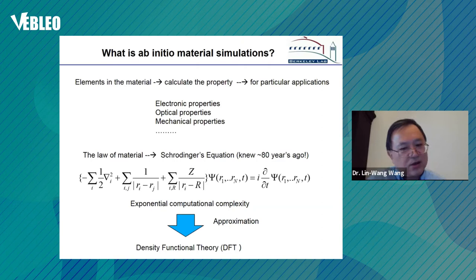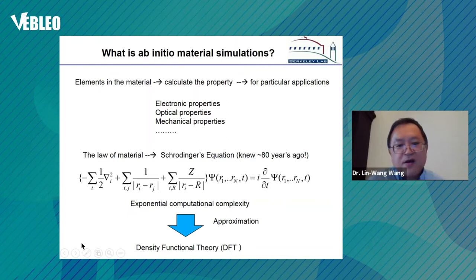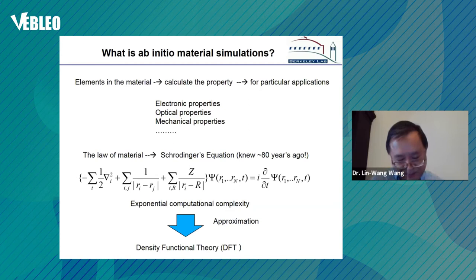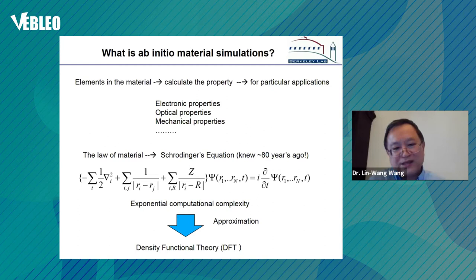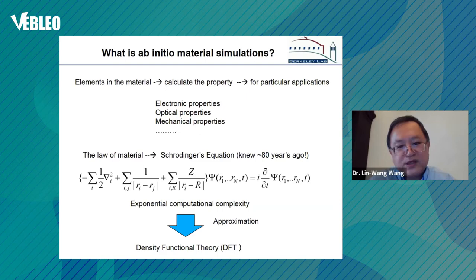The law of materials science is well known — it's over 80 years old and actually very simple. You can write it down in one line: the many-body Schrödinger equation. Unfortunately, if you have N atoms, you have N variables, and even describing the system requires an exponential amount of data and memory. The computational complexity is exponential to the system size, making it very difficult to solve this equation exactly. Most of the effort today is devoted to solving it using approximate methods.